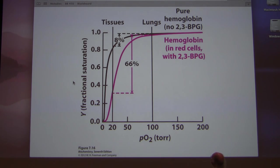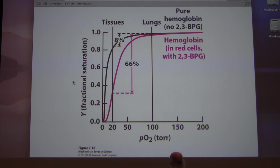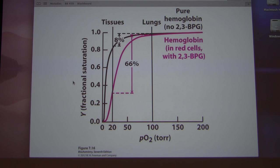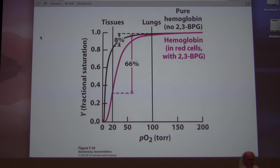So 2,3-BPG favors the release of oxygen — that's wonderful when everything is working well, because you want that signal to tell hemoglobin to let go of oxygen where it's needed. Hemoglobin is a remarkable molecule, and there's more to cover next time.